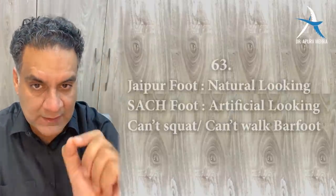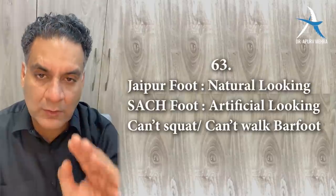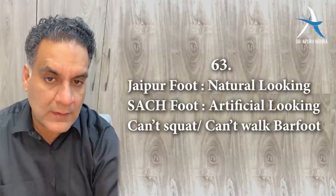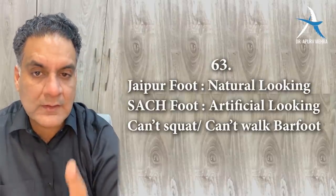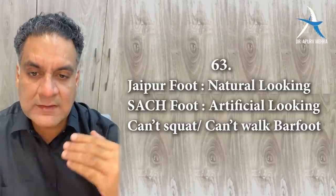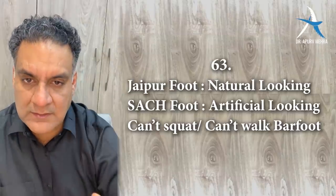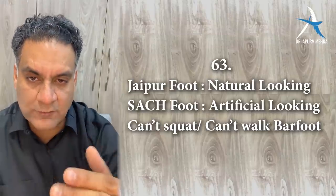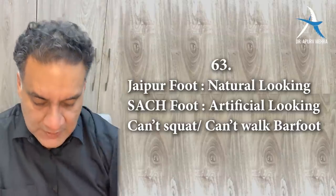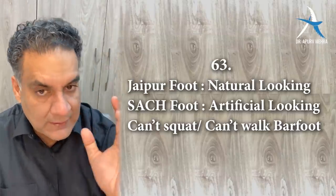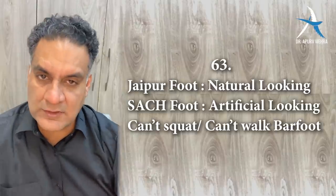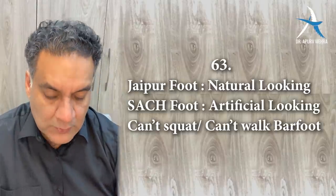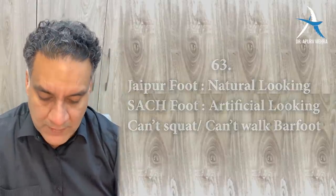Point number sixty-three: Jaipur foot — the Indian prosthetic foot — looks normal, allows you to walk barefoot, and allows you to sit on the ground. Whereas the SACH foot (Solid Ankle Cushion Heel) is an artificial-looking foot — you cannot sit on the ground and cannot walk barefoot.